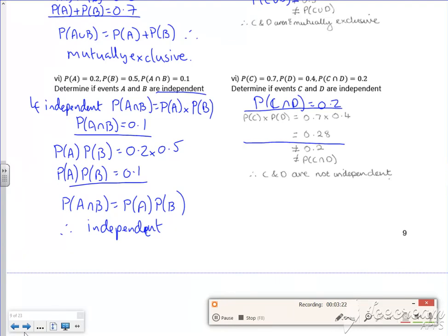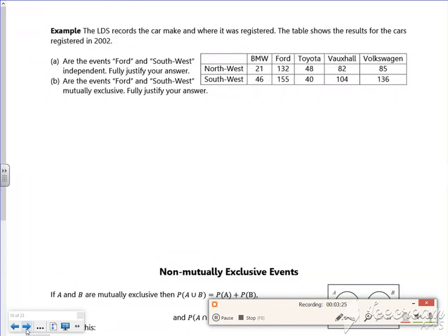Keep going, keep going Dave. Right, so this one's linked to the large data set. So large data set we've got, we'll do some work on that. So we've got the events Ford and Southwest are independent. Right then, so Southwest Ford is 155 out of...